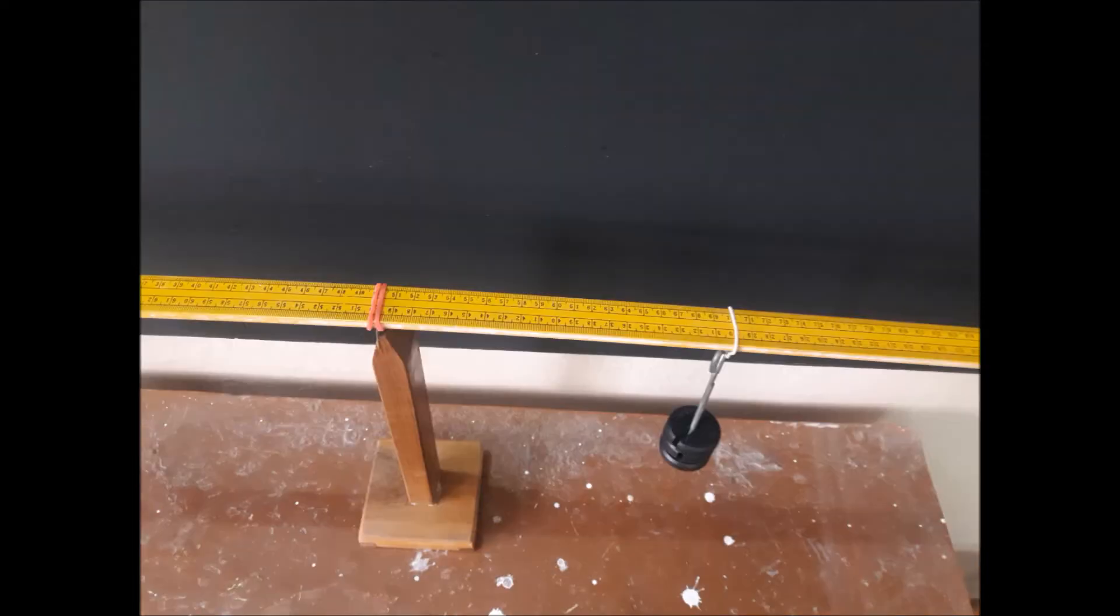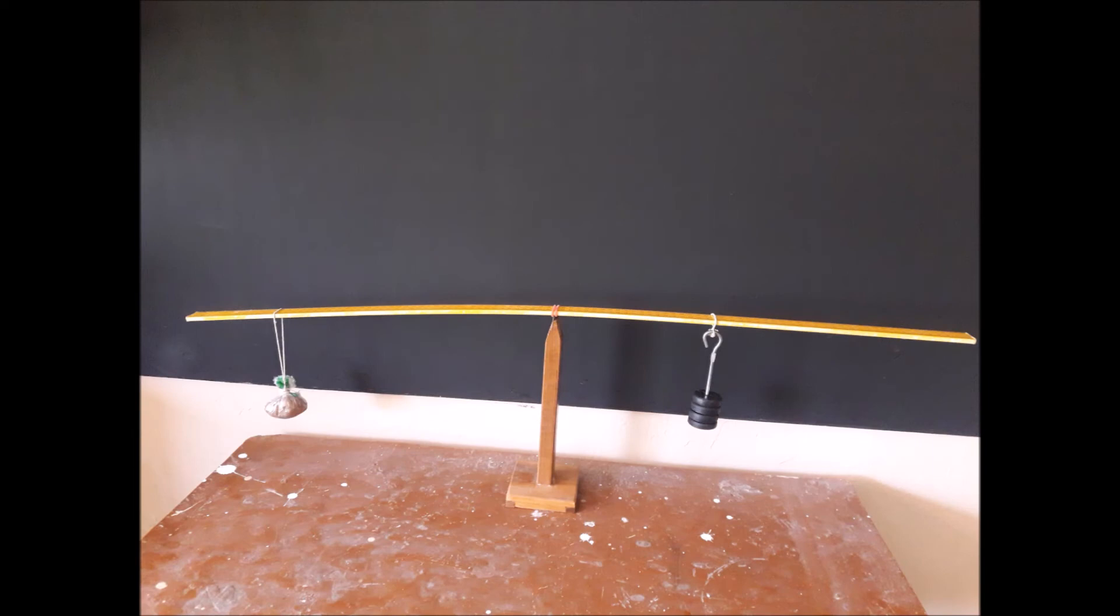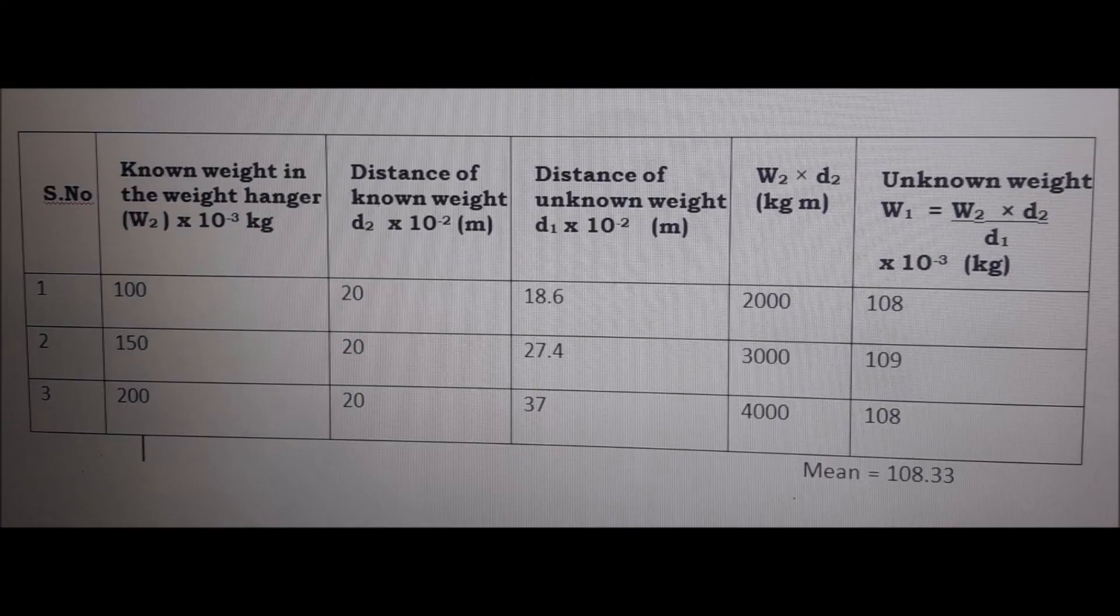Measure the distance D1 and D2 of the two weights from the center of the scale accurately. The experiment is repeated for different positions of the unknown weight. Measure the distance D1. The readings are tabulated as follows.